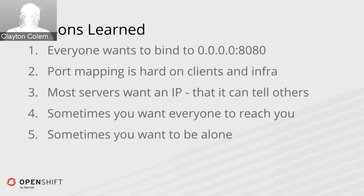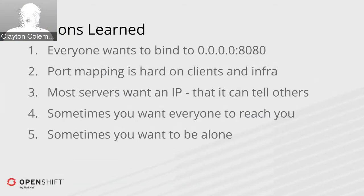Secondly, port mapping adds an extra layer of indirection. Not only do you have to know what host your service is running on, but you also need to encode what port they're running on, meaning the internal and external port are different. A lot of software we want to run on OpenShift — things like MongoDB, Zookeeper, Cassandra, and scalability solutions built around MySQL — almost all of those have as one of their underlying assumptions that the address they listen on is the same address that others reach them on, and that the port they listen on is the port others can reach them on.